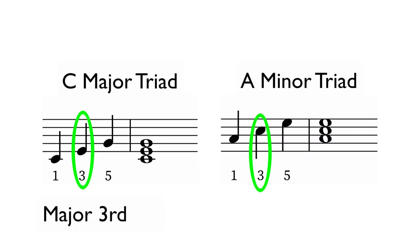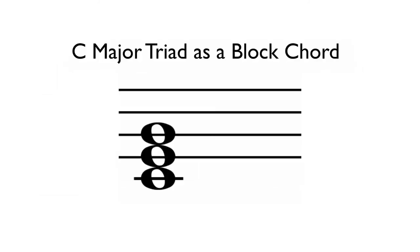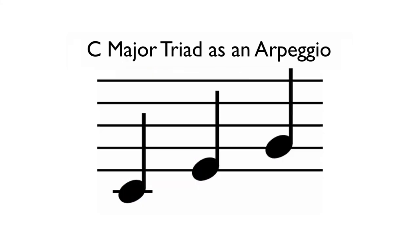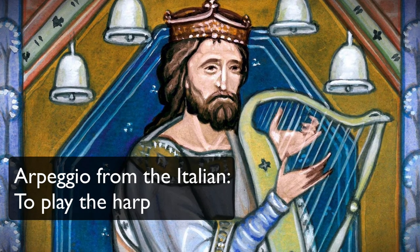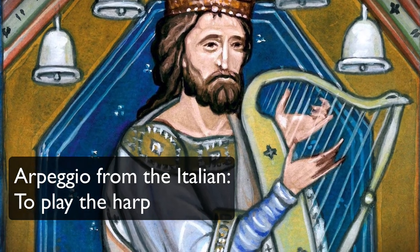We can notate chords vertically, indicating the notes are to be played simultaneously, called block chords. Or we can notate chords horizontally, indicating the notes are to be played one after the other, called an arpeggio, from the Italian way to play the harp.